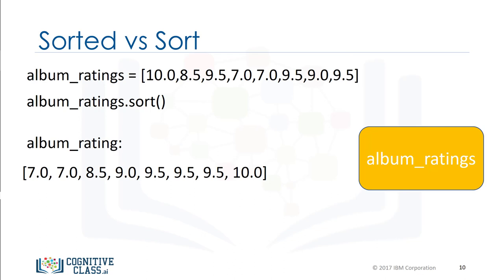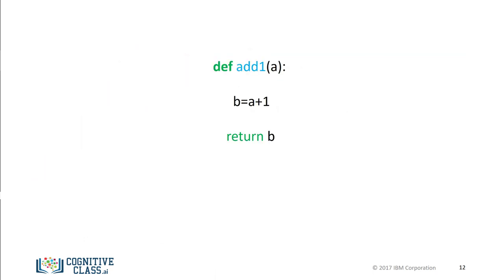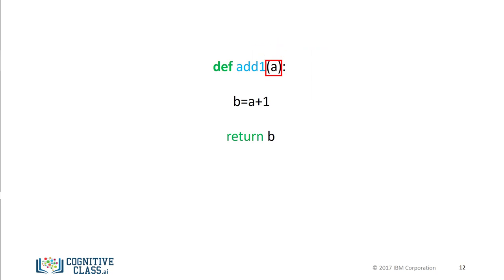Now that we've gone over how to use functions in Python, let's see how to build our own functions. This is an example of a function in Python that returns its input value plus one. To define a function, we start with the keyword def. The name of the function should be descriptive of what it does. We have the function's formal parameter a in parentheses, followed by a colon.